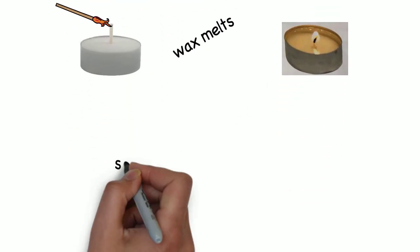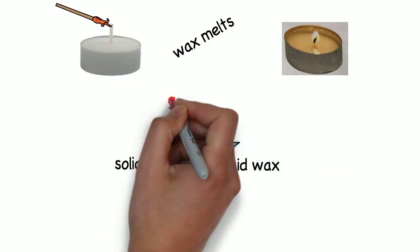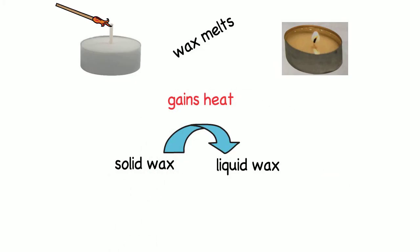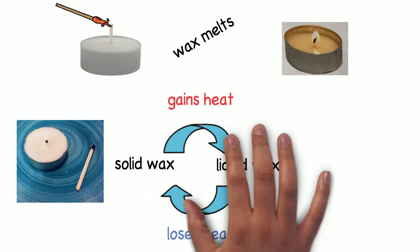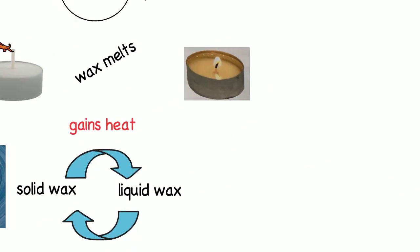That's because the solid wax turns into liquid when it gains heat, and it goes back to its original state, solid, when it loses heat. Now that the candle is off, you can see it's solid again.